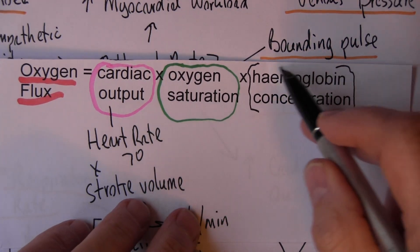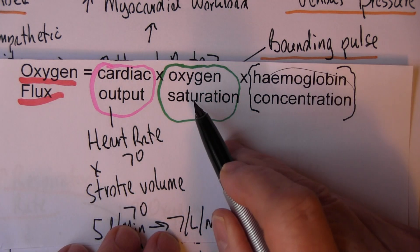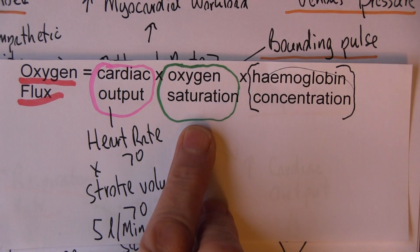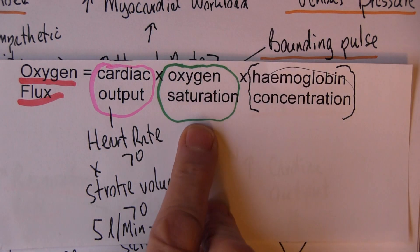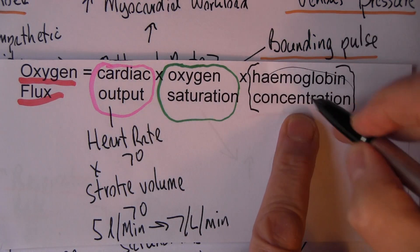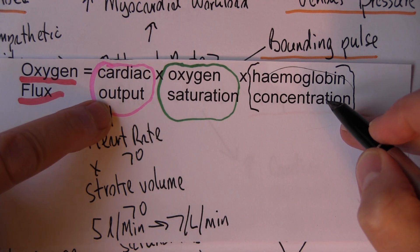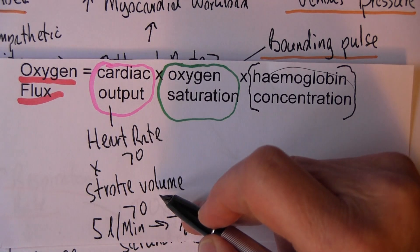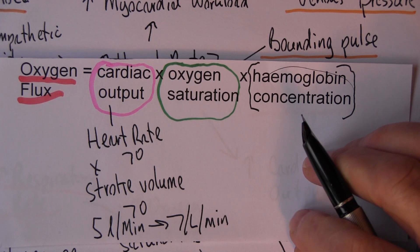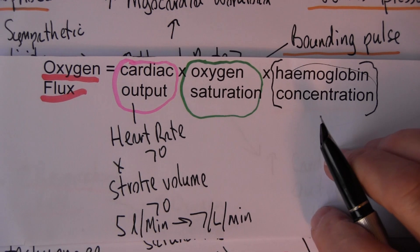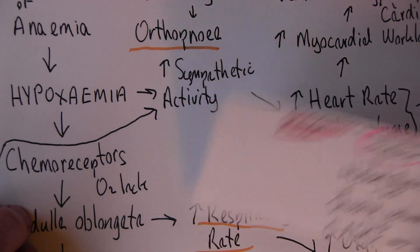When haemoglobin concentrations return to normal, the patient will essentially no longer be anaemic. The tachypnea and fast breathing won't be necessary; the patient will no longer be short of breath on exertion, because the blood is carrying plenty of oxygen with plenty of haemoglobin. The oxygen flux will be adequate, so cardiac compensation will no longer be necessary — the tachycardia and increased stroke volume will no longer be needed, and the long-term complications associated with that won't occur because of your interventions.